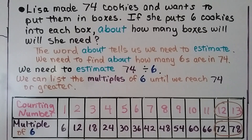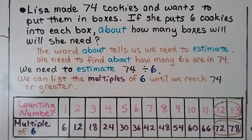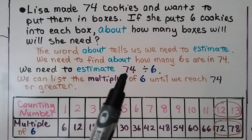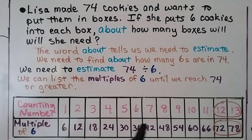Lisa made 74 cookies and wants to put them in boxes. If she puts 6 cookies into each box, about how many boxes will she need? The word "about" tells us we need to estimate. We need to find about how many 6s are in 74, so we need to estimate 74 divided by 6.